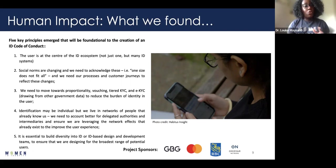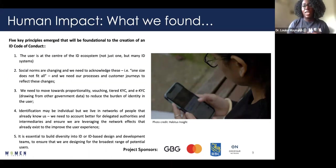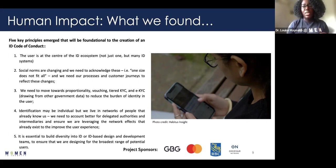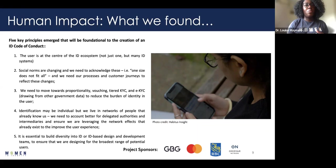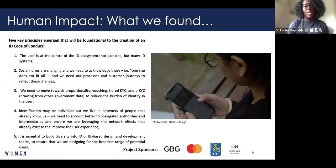The fourth principle is that identification is individual, but we live within a network of people that already know us. How can we leverage those network effects — particularly when thinking about delegated authorities or intermediaries? How can we use information that exists in networks to verify somebody who isn't necessarily able to verify themselves but has delegated authority? How do we take that into account and make it easier for people in those situations to verify themselves?